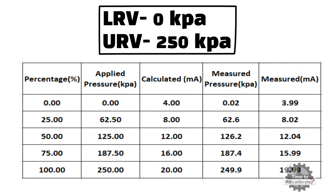Now divide 250 into 4 equal parts. For example, 25% of 250 kPa is 62.50 kPa. So put this value in the applied pressure column just beside 25%. Calculate the same value for 50% and 75% of 250 and put these values in the applied pressure column. Put the 4 to 20 milliampere analog output standard values in the calculated milliampere column. For example, when there is 0% input, the calculated analog output value is 4 milliampere. Write down this value in the calculated milliampere column.